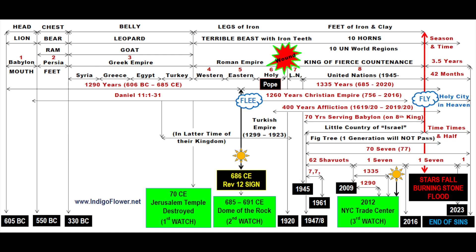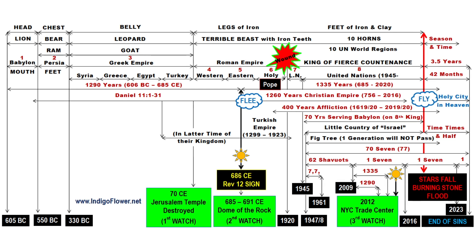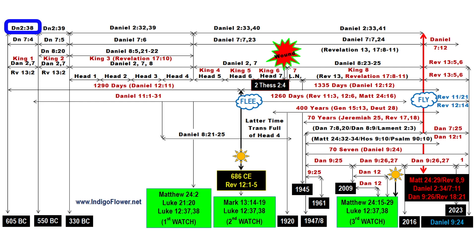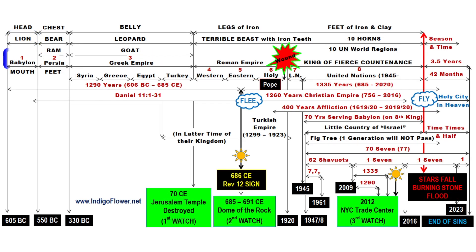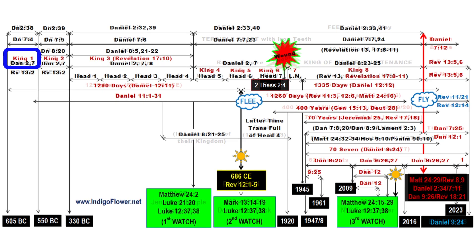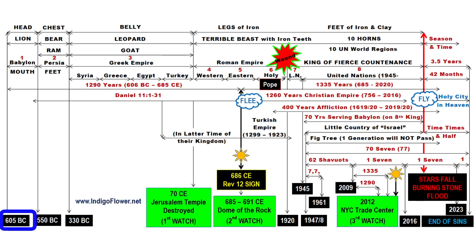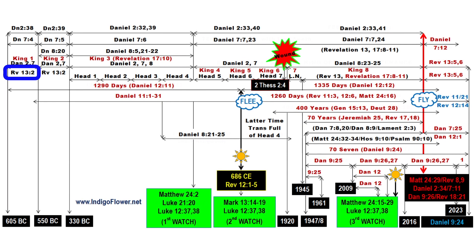We are going to move from left to right, top to bottom. The first event in the top left corner is the head of the image, as explained in Daniel chapter 2 verses 32 and 38. That is also the Lion, which is the first beast in Daniel 7:4. Under that it says Babylon, which Daniel 2 and 7 explain is the Lion and Head. Daniel 2 verses 37 and 38 says Nebuchadnezzar is the Head, and Nebuchadnezzar became the King of Babylon in 605 BC. Babylon is the Mouth, as explained in Revelation 13:2, and is also the First King, as explained in Revelation 17:10.